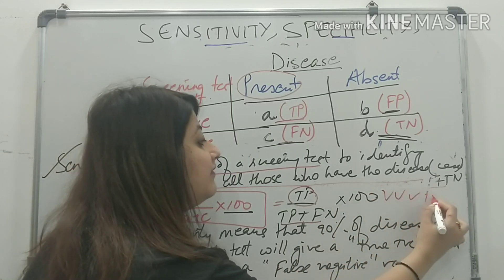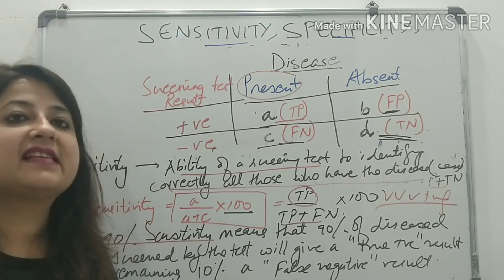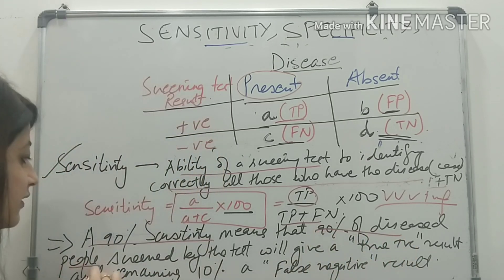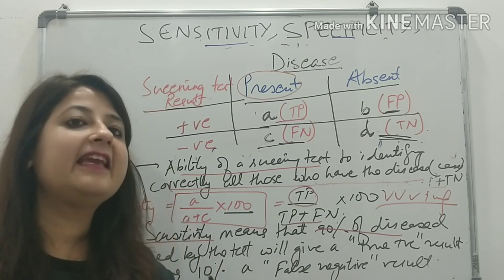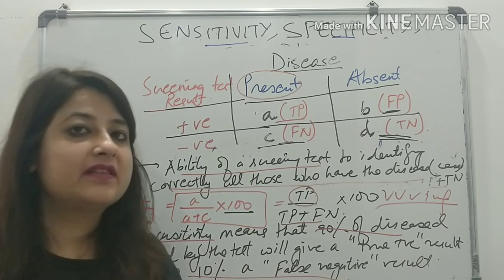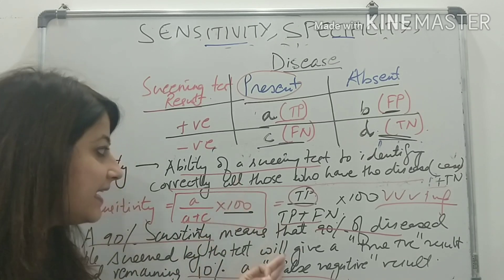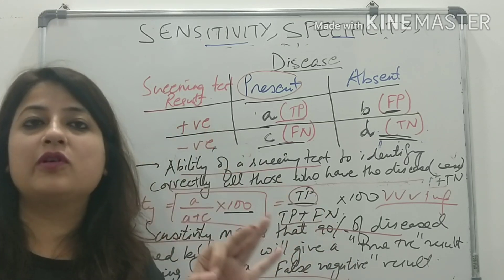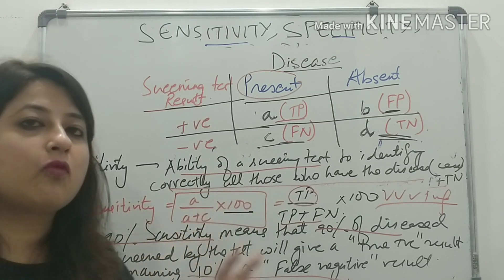Please remember not to forget multiplying by 100 — this multiplication is very important. Sensitivity is true positives divided by true positives plus false negatives, into 100. You will definitely get a MCQ or numerical from this. If a screening test has a sensitivity of 90%, it means that 90% of diseased people screened by the test will give a true positive result, and the remaining 10% will get a false negative result.